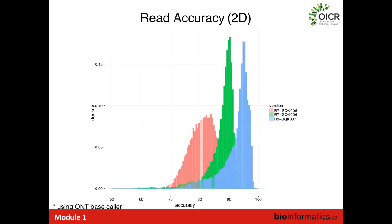Oxford Nanopore's sequencer was known for having a very high error rate and difficult data to work with, but over time this has slowly improved. The early Oxford Nanopore data had an error rate of around 20 percent — an accuracy of about 80 percent. They changed from what they call the R7 pore to the R9 pore, which improved accuracy to around 90 to 95 percent. So it's a little bit better than PacBio, but the error rate is somewhat less uniform, more biased toward difficult sequencing contexts like homopolymer runs.